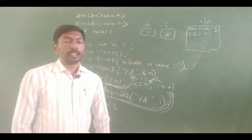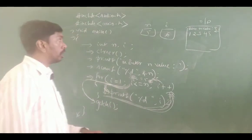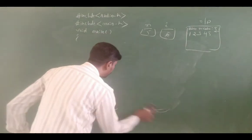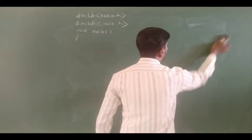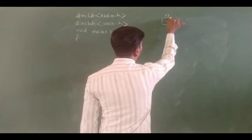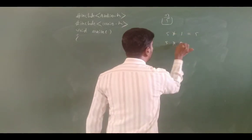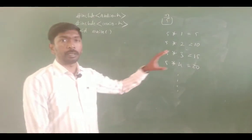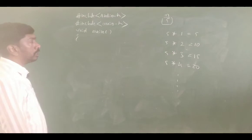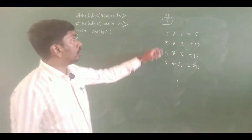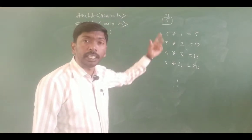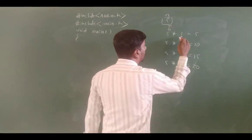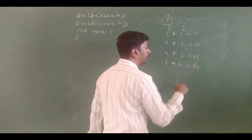This is the simple example. Next we have to print the multiplication table for a given number. For example, 5 into 1 is equal to 5. We need to print the multiplication table for any number n, where i increments from 1 to 10.